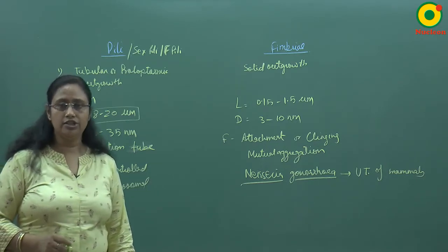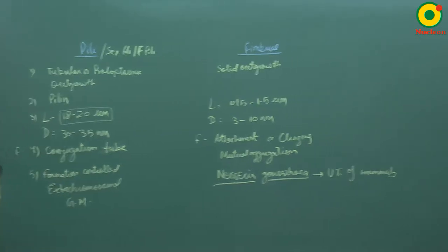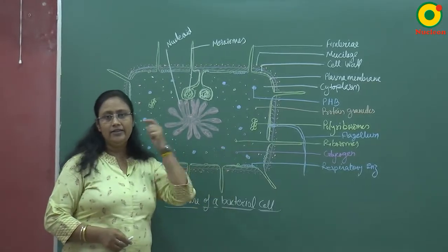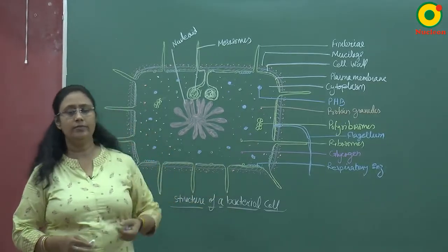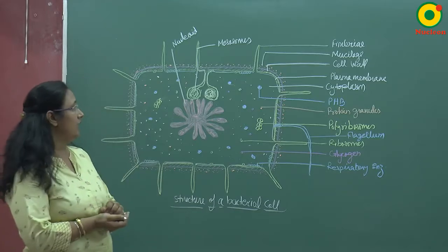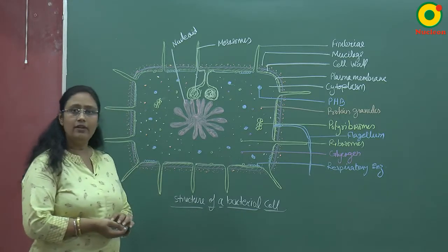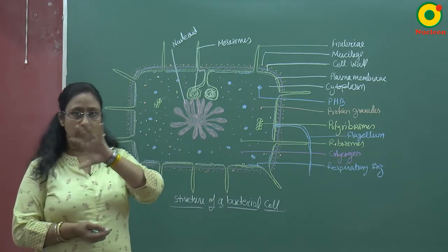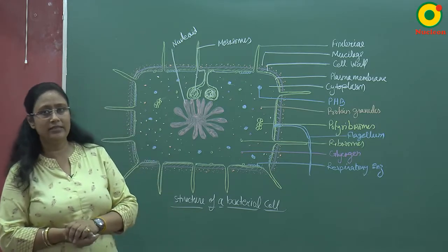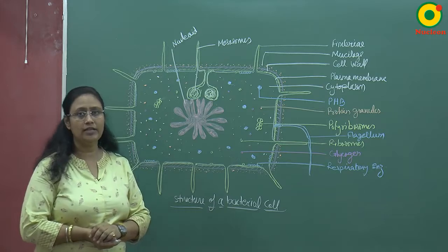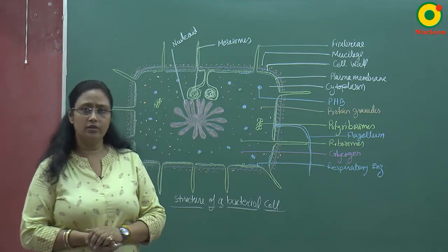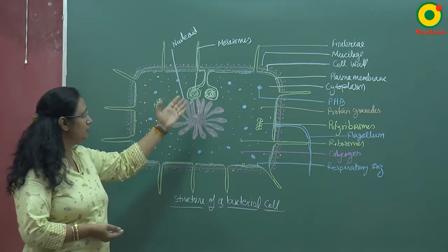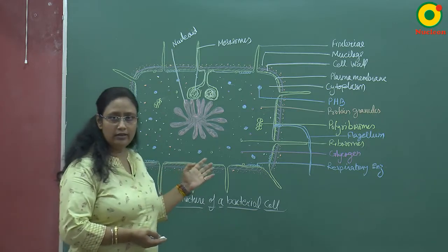Next, I will discuss the cellular structure of bacteria. A bacterial cell is basically covered by a chemically complex cell envelope. Below this cell envelope is the cytoplasm, which consists of a few organelles like ribosomes, polyribosomes, nucleoid, mesosomes, and a few storage granules.